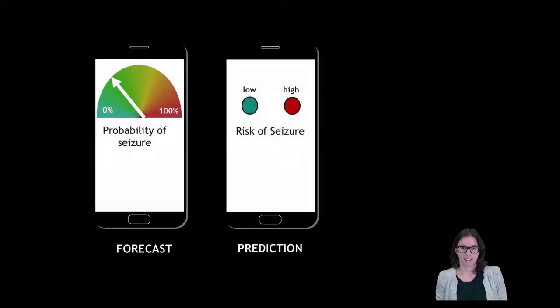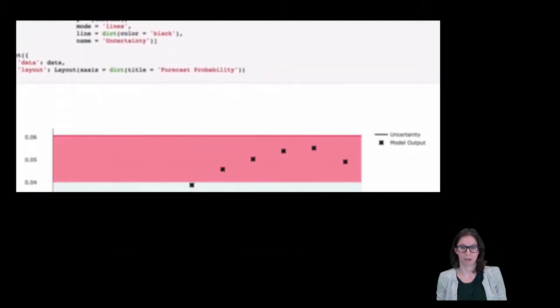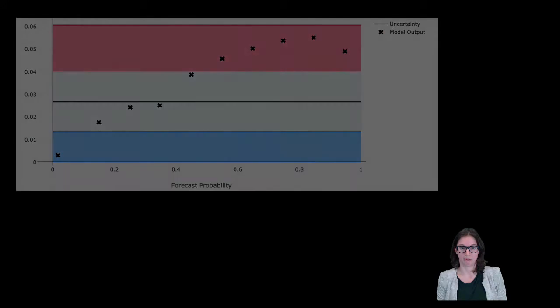Forecasting models capture a continuum of seizure probability rather than making a binary decision. This means we have a whole new set of tools to analyze algorithm performance.